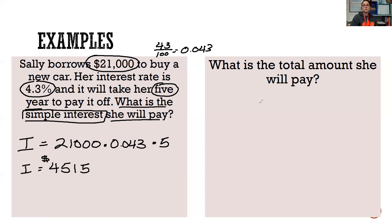Our next question is, what is the total amount she will pay? So we're looking for total, which is our principal plus our interest. So we're going to take our $21,000 and add our $4,515. Don't lose zeros in the process. And you're going to end up paying $25,515 in total to pay back your loan to buy your new car.